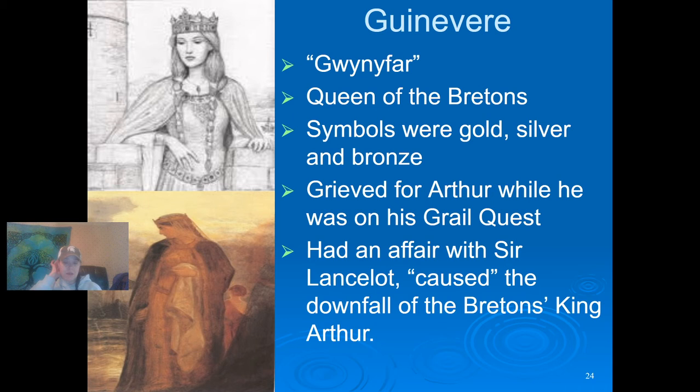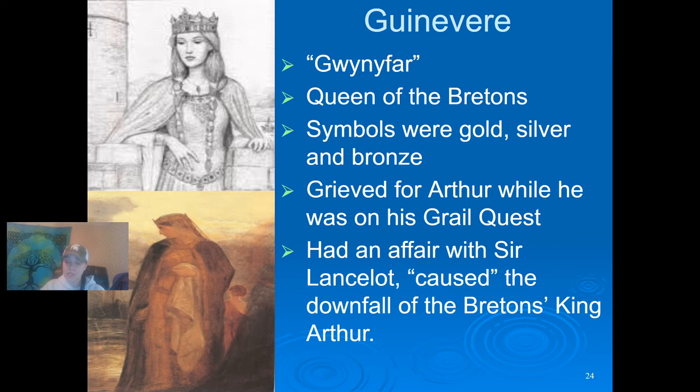She brings the Round Table and 100 knights to King Arthur as her dowry to marry. By the time the poet Chrétien de Troyes wrote of her affair with Lancelot, it is well established — it is Lancelot, not Arthur, who rescues Guinevere from her abductor, Maligant. She is an accomplice to Mordred's treachery against Arthur in the Vulgate Cycle. In Thomas Malory's Le Morte d'Arthur, Guinevere's character comes to full fruition: her lifelong relationship with Lancelot, who rescues her from being burnt at the stake for adultery, eventually brings about the downfall of all of Camelot.